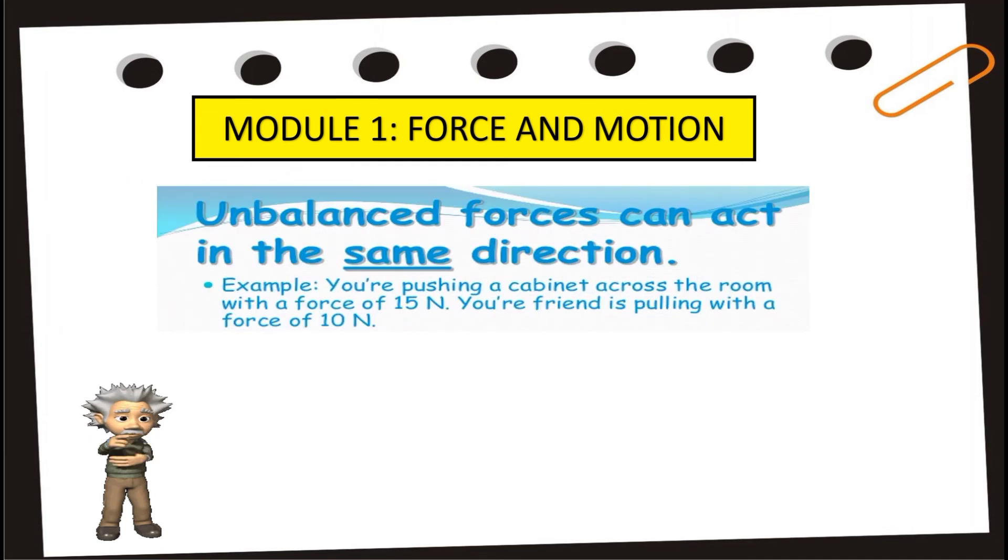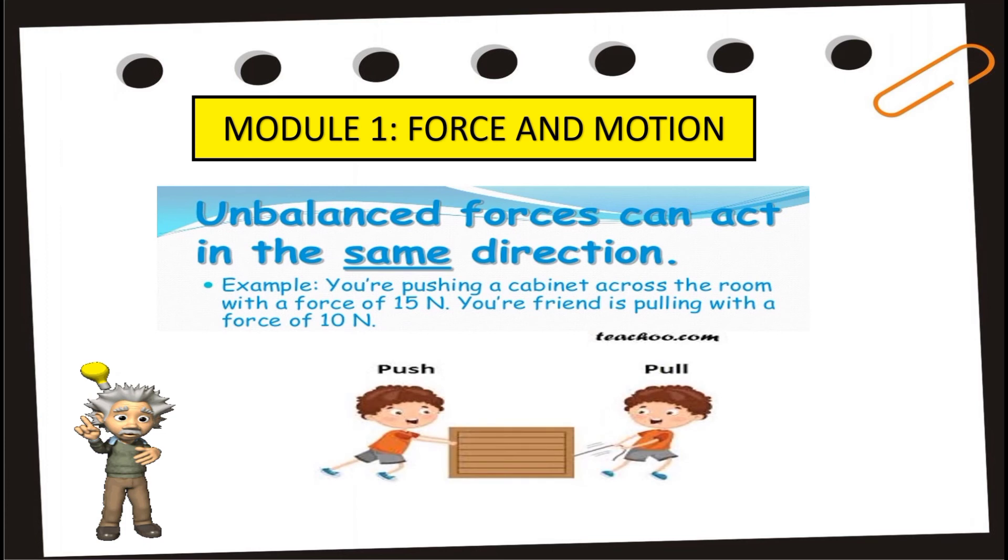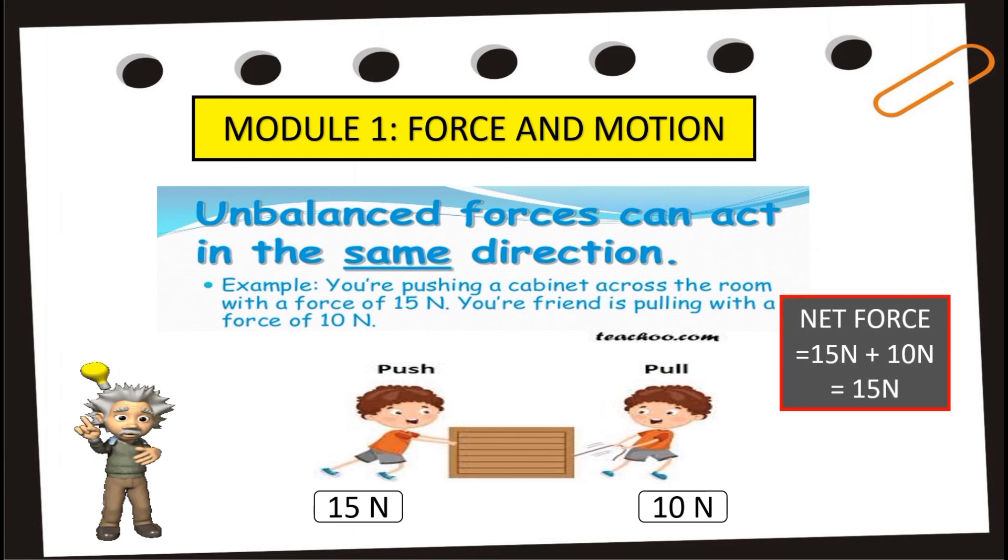Unbalanced forces can act in the same direction. Example, you're pushing a cabinet across the room with a force of 15 newtons. Your friend is pulling with a force of 10 newtons. Now, what is the net force? To get the net force, we simply add 15 newtons and 10 newtons since both forces were applied on the same direction. And so, we have a net force of 15 newtons. And definitely, the object will move to the right.